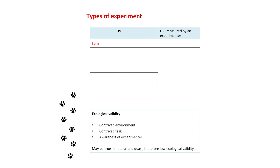So you've got lab, field, natural, and quasi-experiment. The point about the natural and quasi-experiment is they're not quite an experiment because the independent variable is not something that's controlled by the experimenter. In the case of a natural experiment, that variable would change even if the researcher was not interested in the study — so it's changing naturally. But I think the word 'natural' causes everyone some problems, which I'm about to explain.